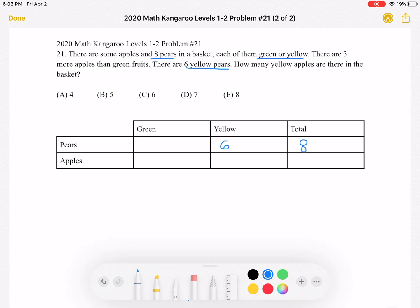So if we take the total number of pears, which is 8, subtract the number of yellow pears, which is 6, we will get 2. There must be 2 green pears because the number of green pears plus the number of yellow pears must be the total number of pears, which is 8. So now let's look at the apples.